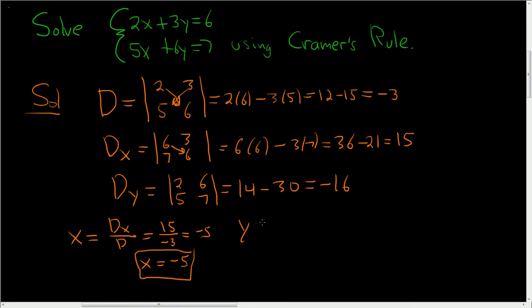And y is big D sub y over big D. So negative 16 over negative 3, which is 16 over 3. So y is 16 over 3.